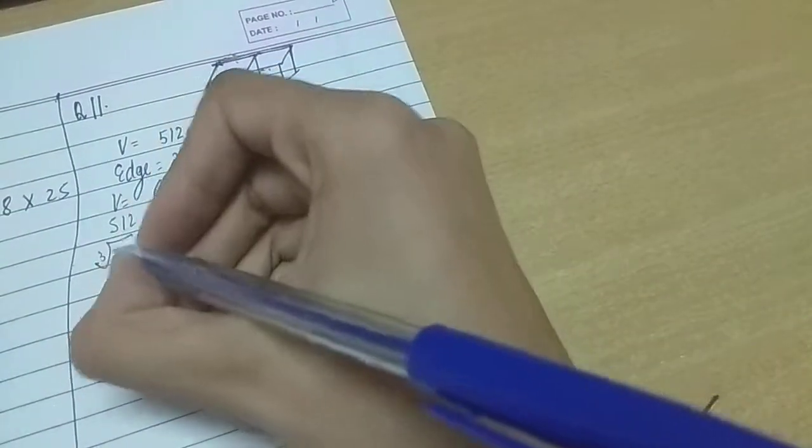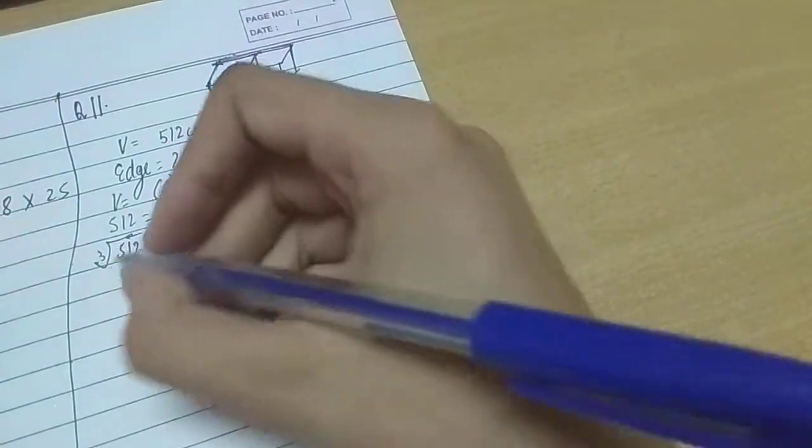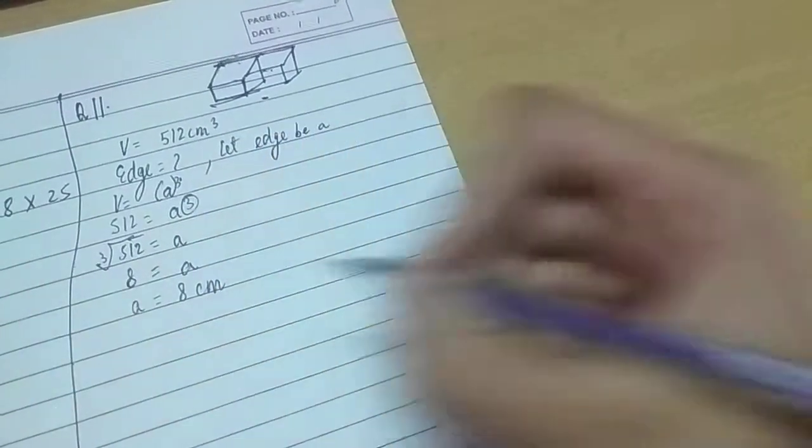So volume 512 is equal to a³. Taking cube root, it would become cube root of 512 is equal to a. Now cube root 512 is equal to 8, so the edge is equal to 8 cm.